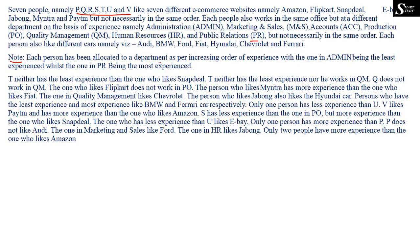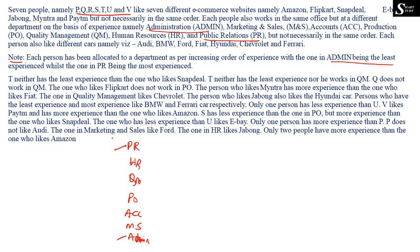Note: Each person has been allocated to a department as per increasing order of experience, with the one in Admin being the least experienced and the one in PR being the most experienced. So the order from least to most experience is: Admin, Marketing & Sales, Accounts, Production, Quality Management, HR, and Public Relations.